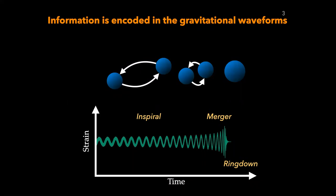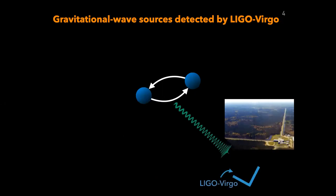At the merger, when the two stars merge, the gravitational signal reaches its maximum and the frequency goes up. After the merger, there is a very short period for the system to stabilize itself — that's what we call the ring-down phase. So the in-spiral, the merger, and the ring-down phase are the three major components of gravitational wave signals from any binary merger.